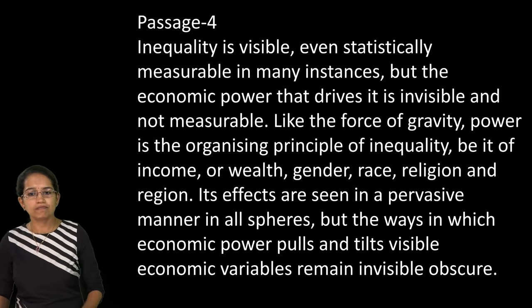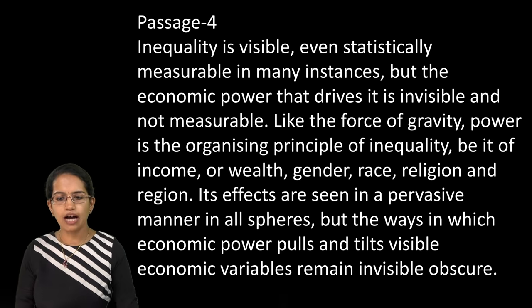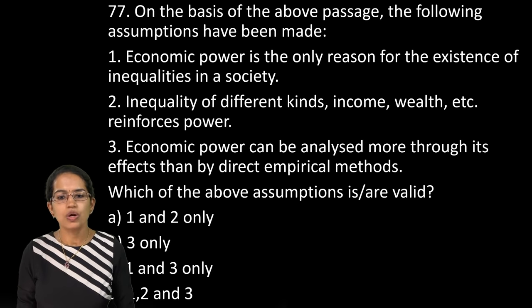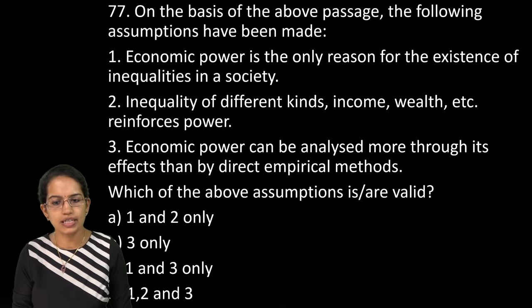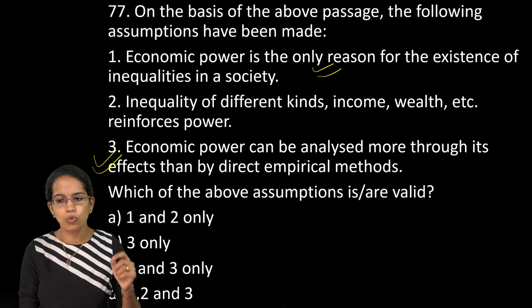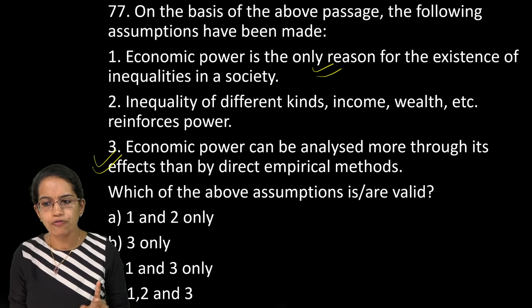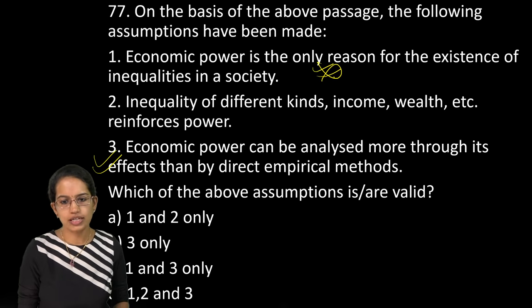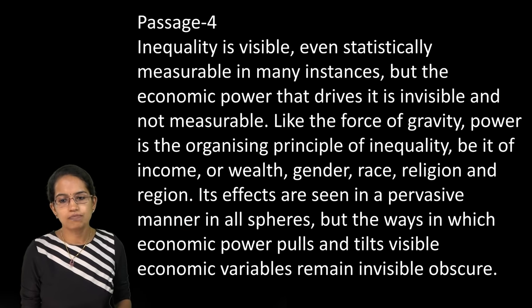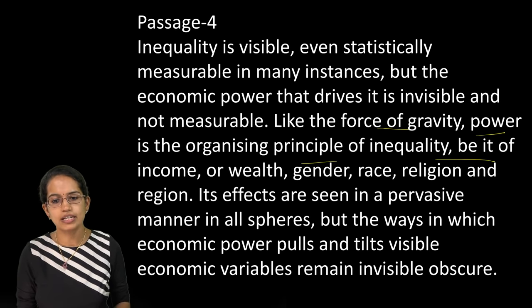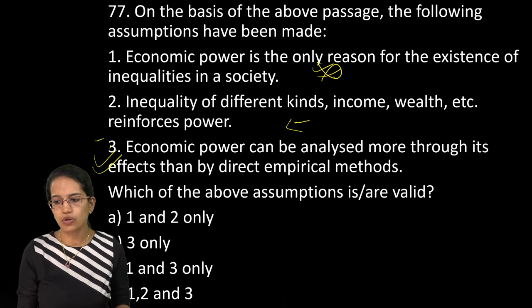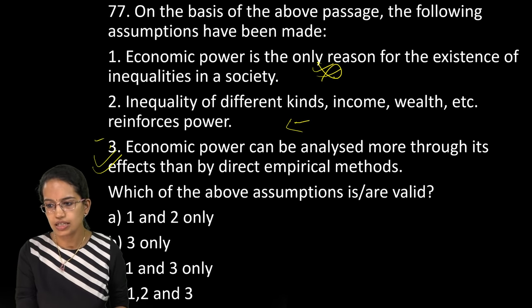The next passage talks about inequality. So where all inequality is seen, how it acts, how it affects the various spheres has been mentioned. So which of the following assumptions is true. Economic power can be analyzed more through the effect than by the direct empirical method. The passage, the statement one that is there. It does not claim that there is only one driving variable of inequality that is present. So this is not the correct statement. And the second statement is what is said is opposite in the passage. So it talks about the forces of gravity power in organizing the inequality as income, wealth, race and gender. So that is again, it's not reinforcing. So you have three only as the right answer.